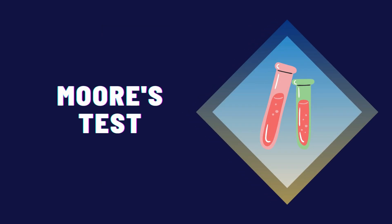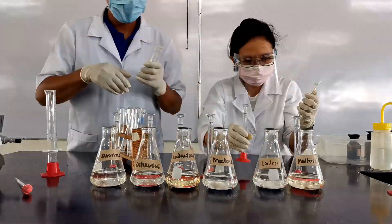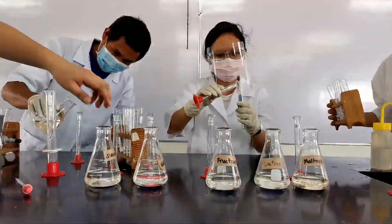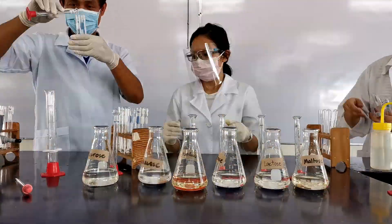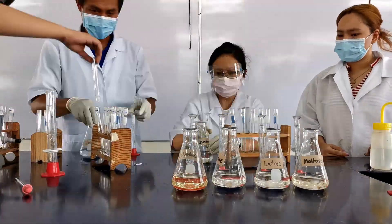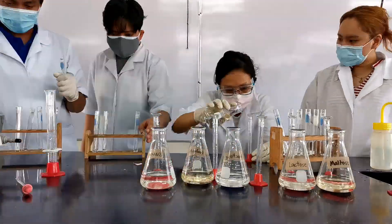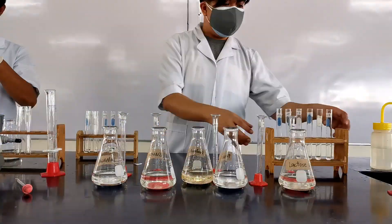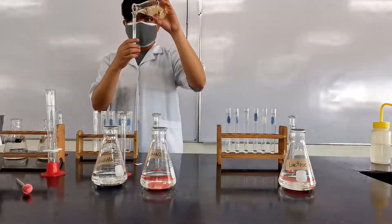Let's start with the Moore's test. Place 1 ml of carbohydrate solution in each test tube. Since we have 6 different carbohydrate solutions, we need 6 test tubes for each test. Use the graduated cylinder to measure small volumes and make sure to label your test tubes using the label tapes and markers.